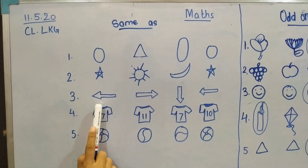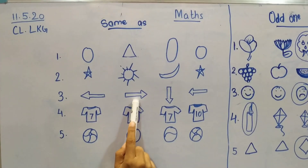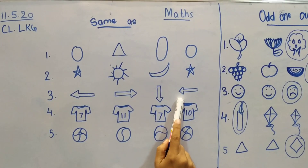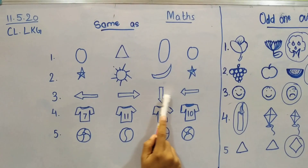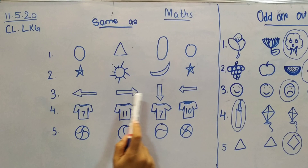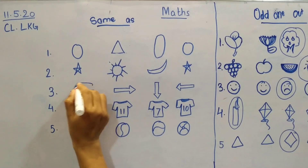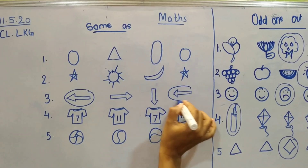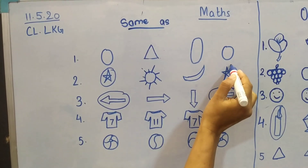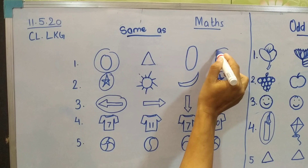Now look at number three. The arrow is showing which side? The left side. Then a right arrow, a down arrow, and again a right arrow. Is this similar to this? No. But these two right arrows are similar. So these two are similar. Number two had these two stars similar, and number one had these two circles similar.